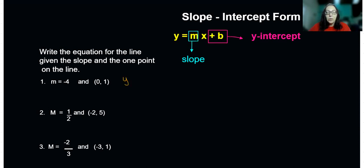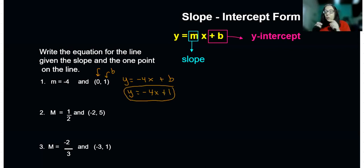I'm going to start by putting m in the equation: y equals mx plus b. Now, if the x value of your ordered pair is zero, the other number — the y — represents b. So in this case we don't have a lot of work to do: y equals negative 4x plus 1, and that's our equation. Whenever the x value is zero in your ordered pair, the y value is your y-intercept.